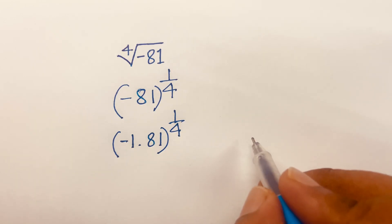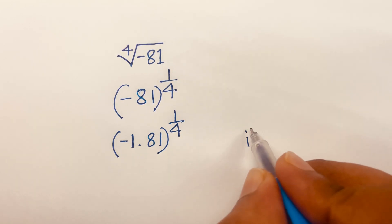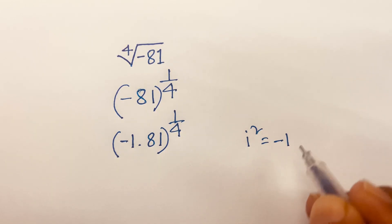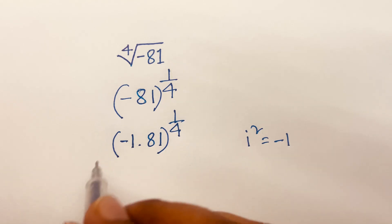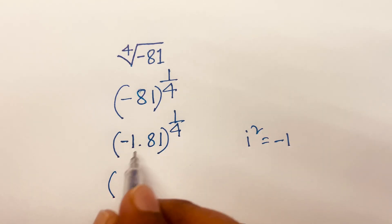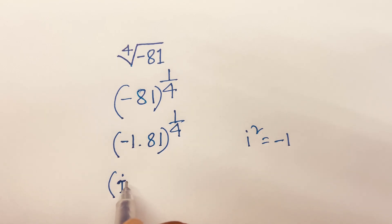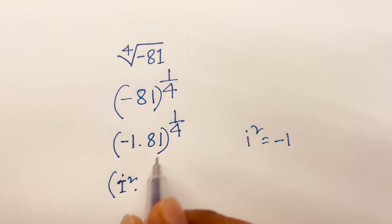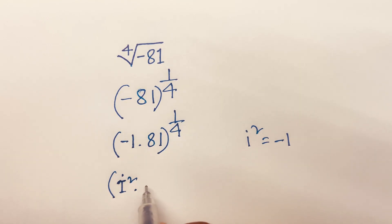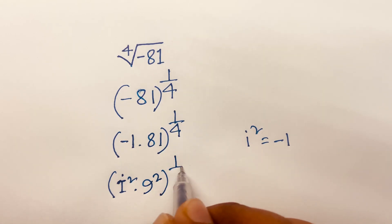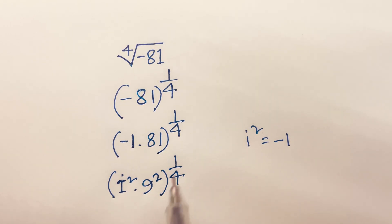You know that i squared is minus 1. So I can say here minus 1 is i squared, times 81 which is 9 squared, all in bracket raised to the power of 1 over 4.